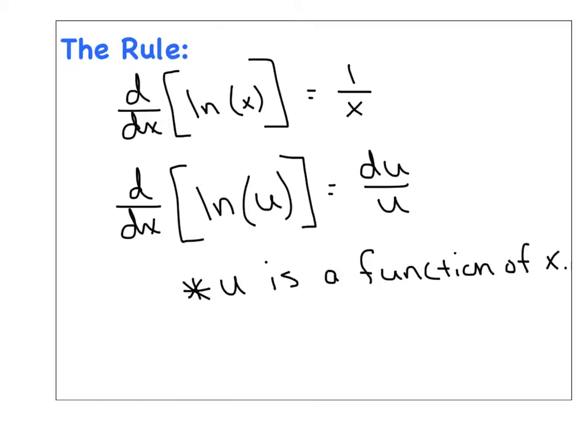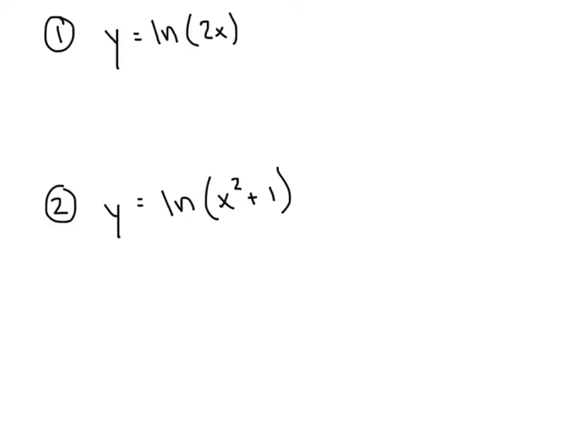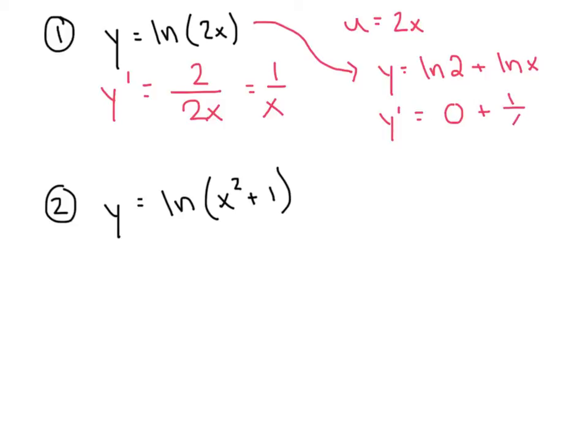All right, let's go practice some. Here's two nice ones to warm up. In this first example, the u is referring to the quantity 2x. So my derivative is the derivative of u divided by u itself, which simplifies to simply 1 over x. Now interestingly enough, if I had used my natural log properties from algebra 2 before doing any calculus, I could have expanded this and said it's the natural log of 2 plus the natural log of x. The natural log of 2 is a constant so its derivative would have been 0, and then the derivative of the natural log of x is 1 over x. Notice I get the same answer.